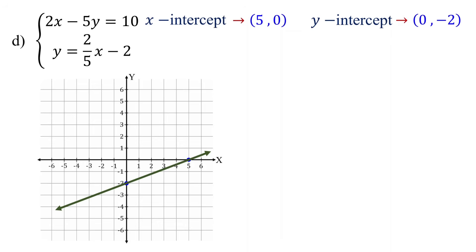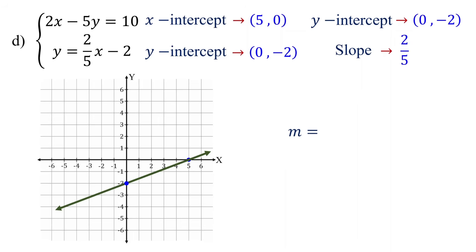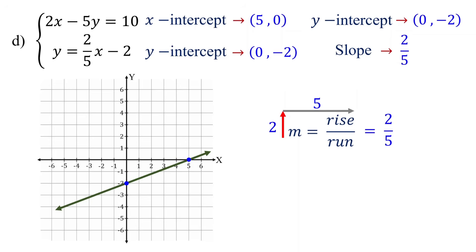Moving on to the second equation, which is in slope-intercept form. The y-intercept is at (0, -2) and the slope is 2/5. Start by plotting the y-intercept. Slope is rise over run — in this case it is 2/5, which means the rise is 2 units up and the run is 5 units to the right. Starting from the y-intercept, move up 2 units, then go to the right 5 units, and plot the second point. You have likely noticed that both points lie on the line of the first equation.